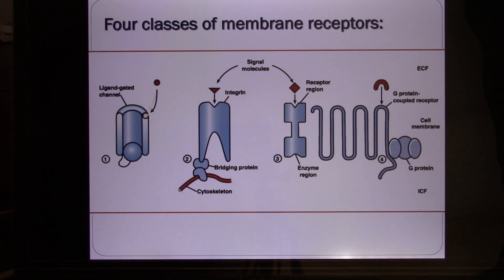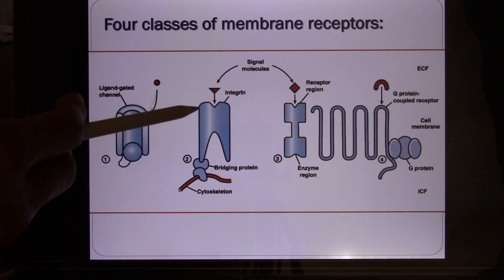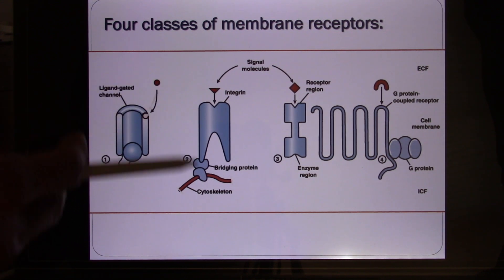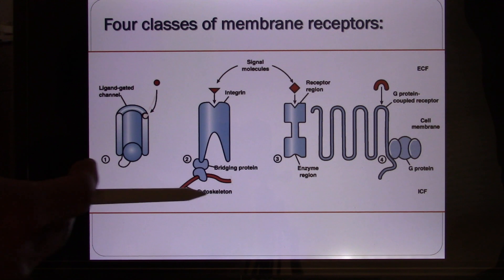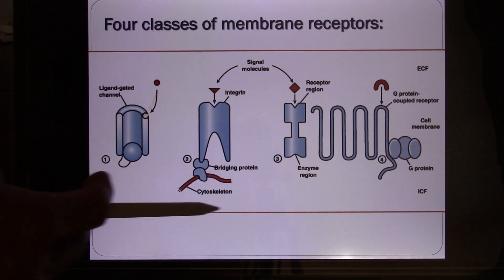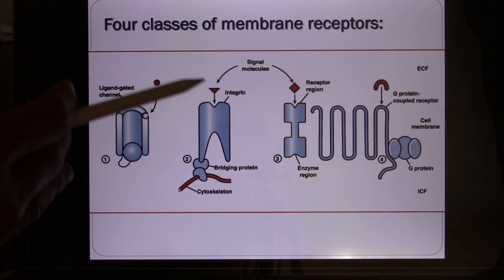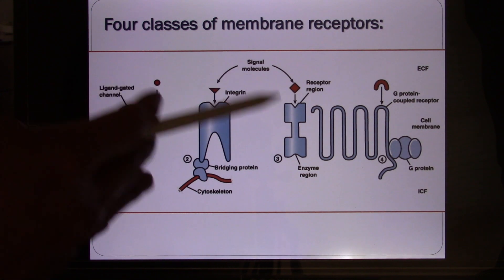Some membrane receptors can be integrins. We don't emphasize too much on this one. It will connect with the cytoskeletal system, so it can change the structure and sometimes create movement of the cell when the ligand binds with it.